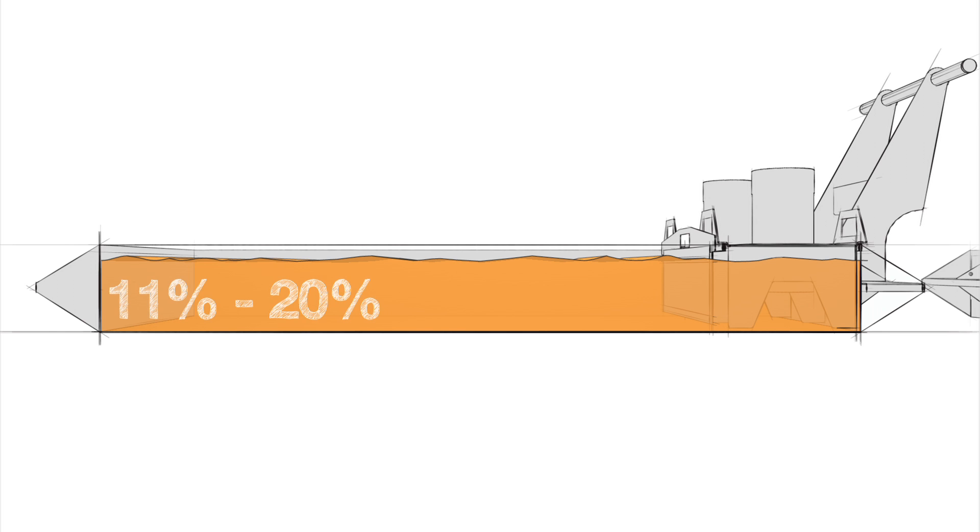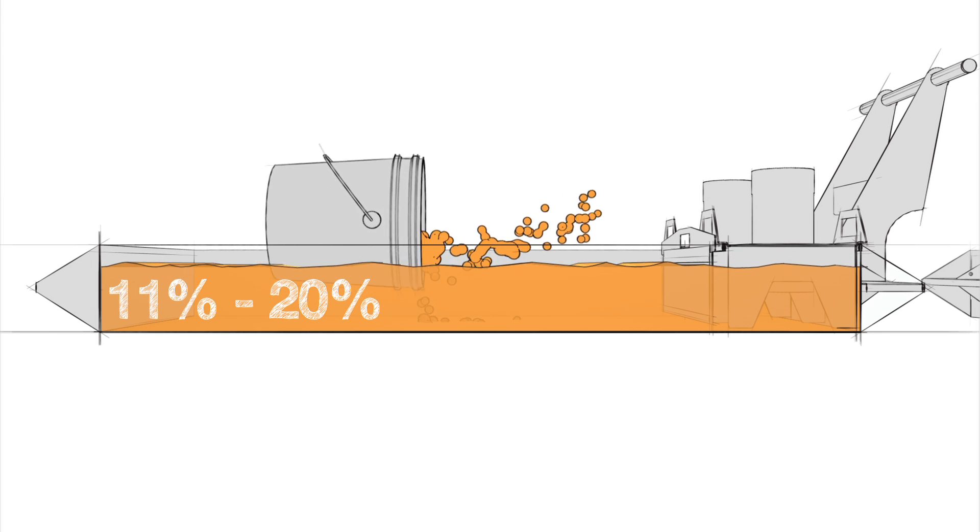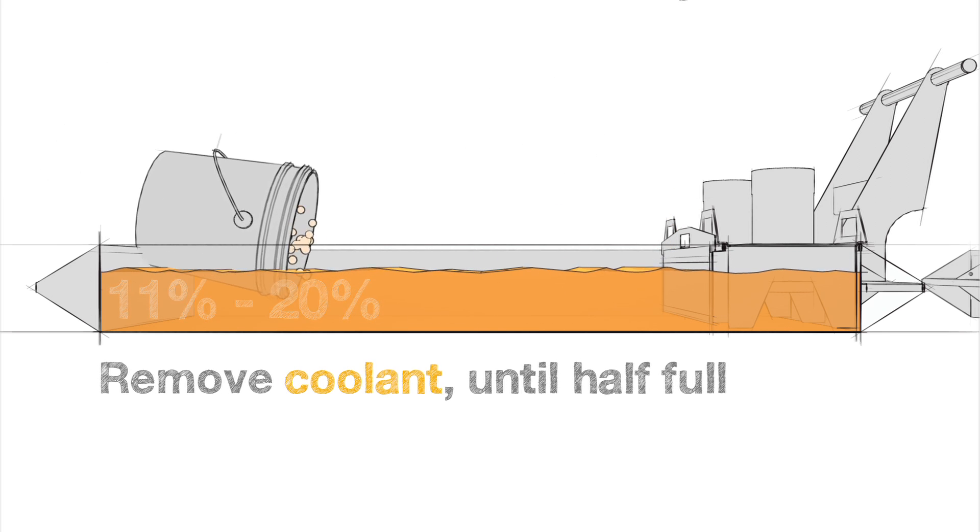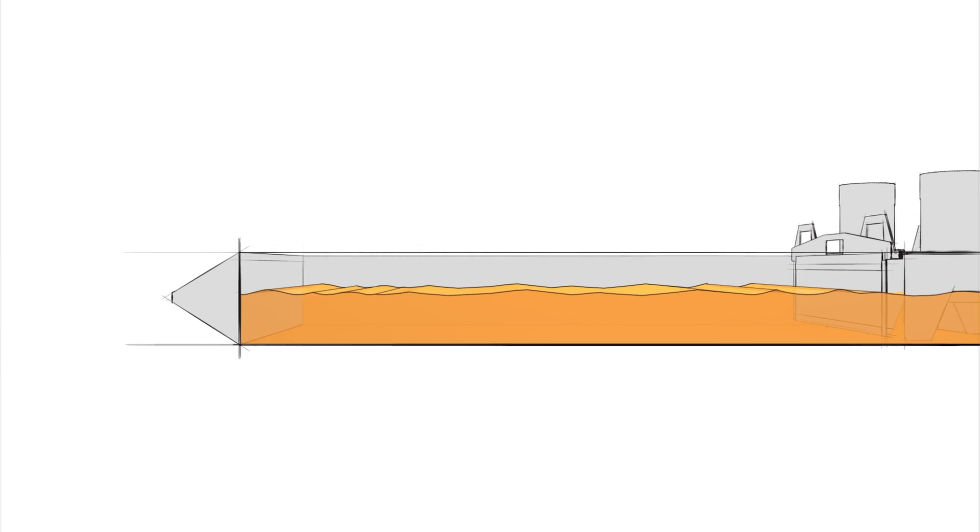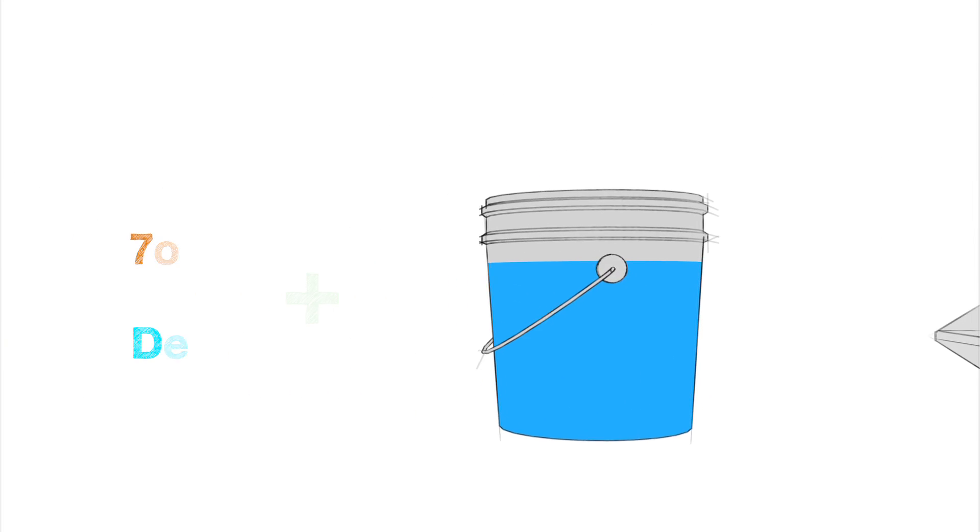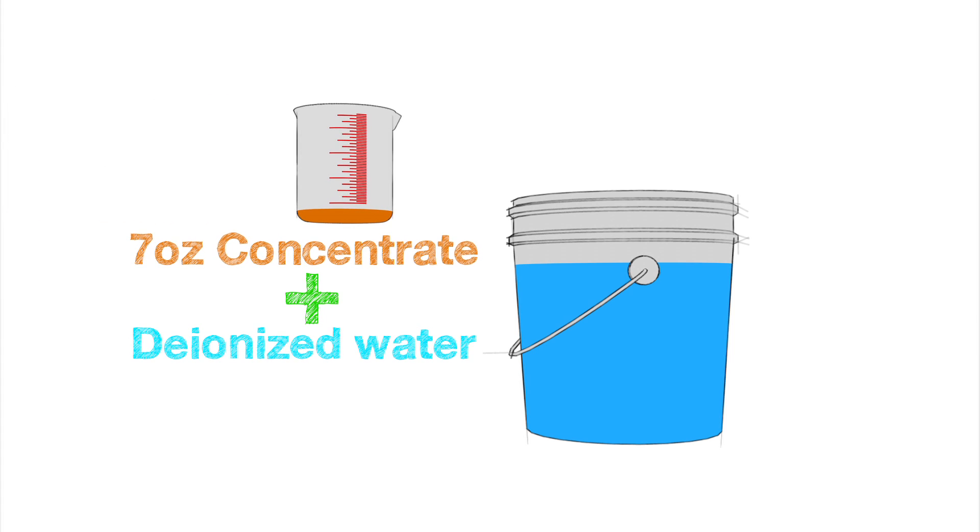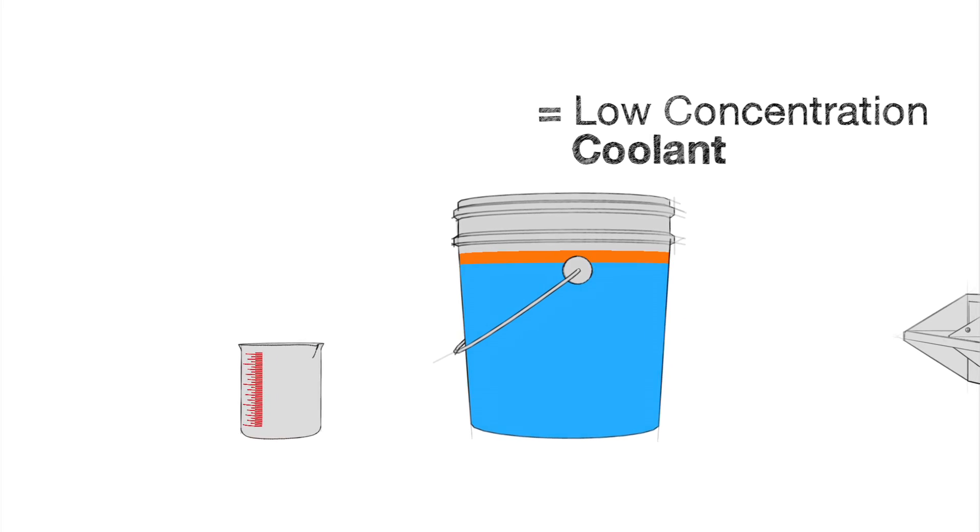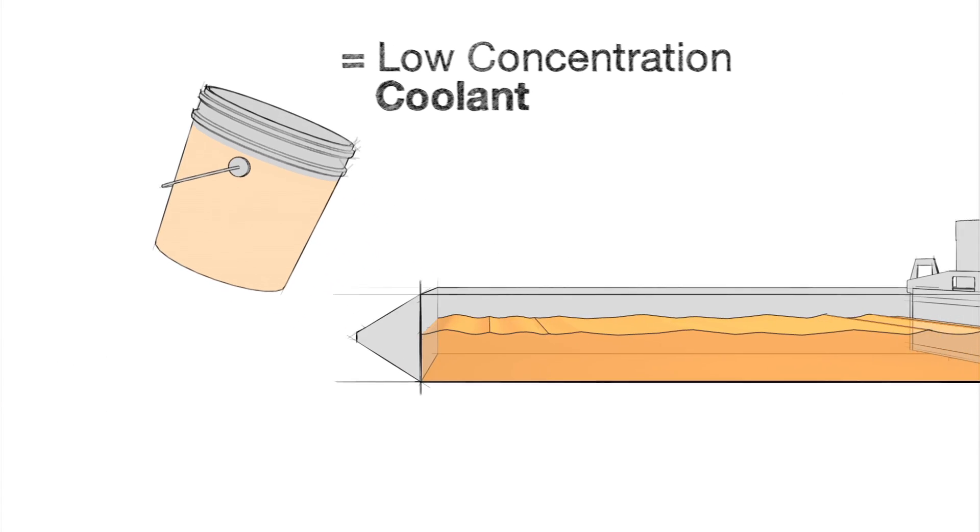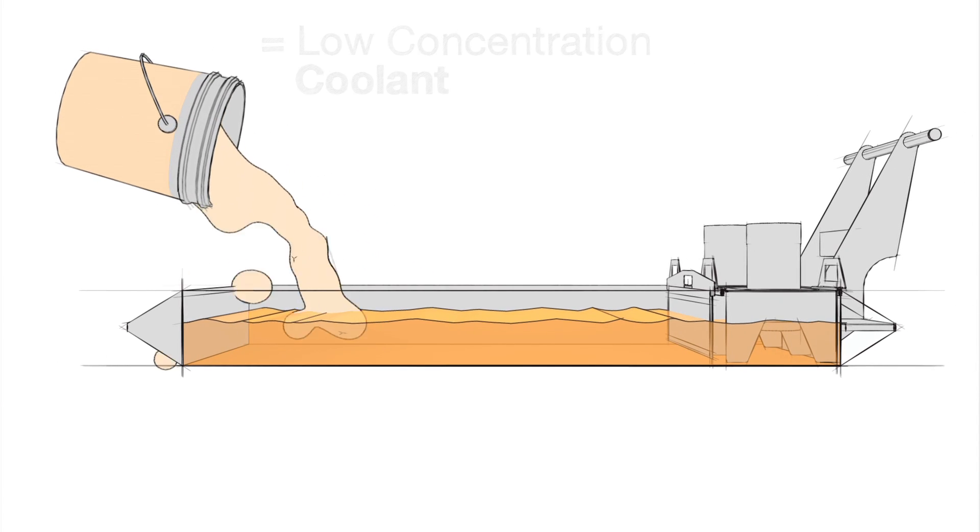For high concentrations under 20%, run the coolant down to half full during normal use, or remove coolant until half full. Then add 5 gallons of deionized water to a bucket and mix in 7 ounces of concentrate to make a 1% mixture, and add this to the tank until full.